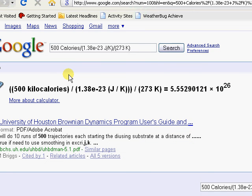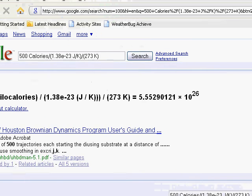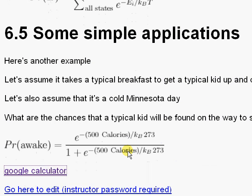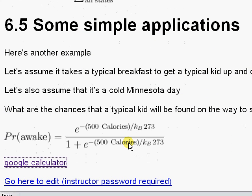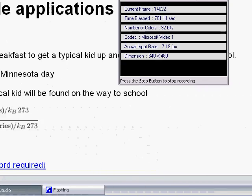And it says that, well, 500 capital C calories is 500 kilocalories. You have to divide through by everything. And just that part, just what's going to go in the exponential, is a monstrous number—10 to the 26. We're going to put a negative sign in front of that and exponentiate it. It's effectively zero. Okay, so if we go back, we find that the probability is zero divided by one plus zero, which is zero, which is probably what you thought about your own kids.